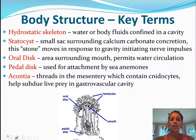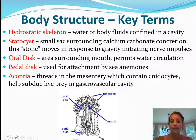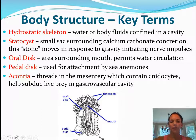Some key terms for body structure: a hydrostatic skeleton just means that water and body fluids are confined in a cavity — they don't actually have a bone structure. A statocyst is a small sac that surrounds them and moves in response to gravity, which causes nerve impulses. Jellyfish can move and sense things even though they don't have a nervous system like we typically think of.